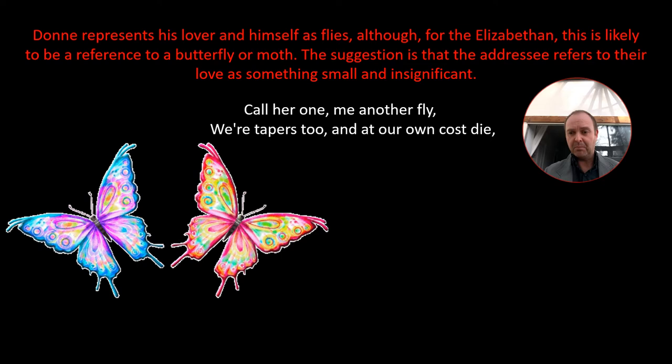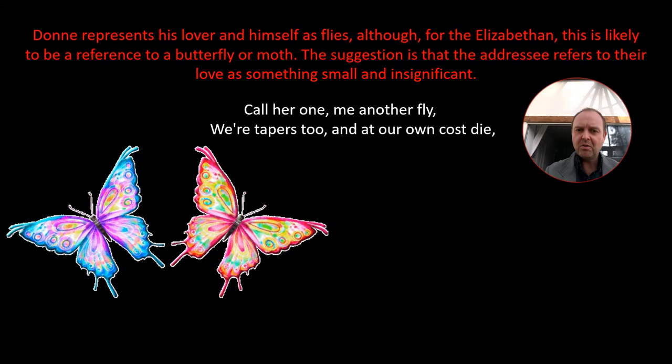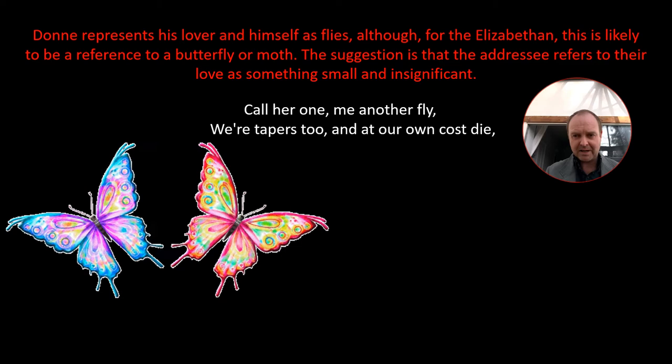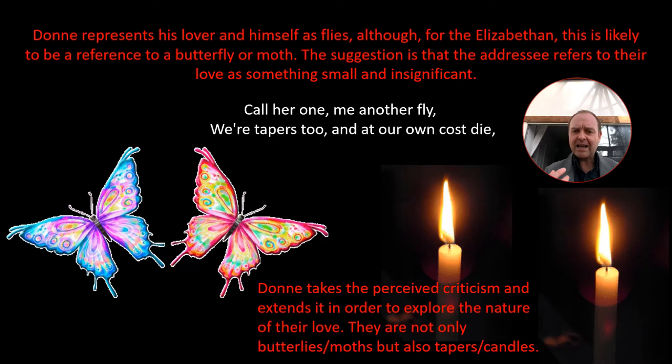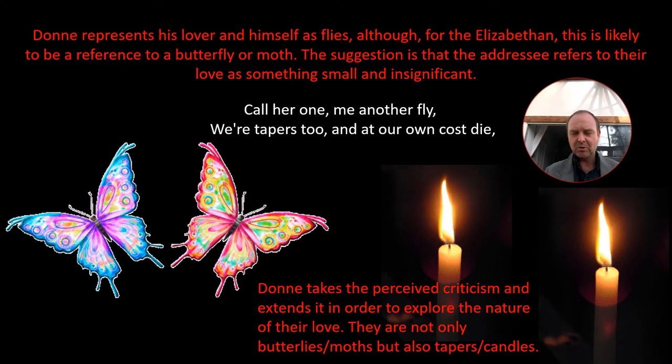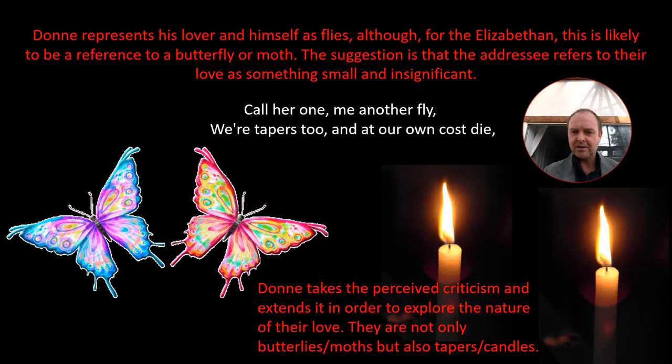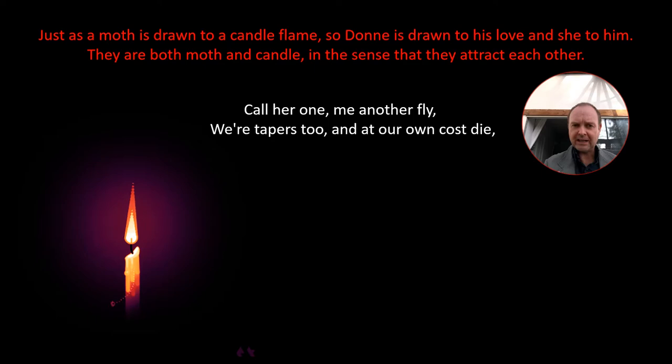The suggestion is that the addressee refers to their love as something small and insignificant — that's just the addressee making that claim, when for Donne, obviously, it's quite the opposite. So Donne takes this perceived criticism and extends the concept in order to explore the nature of their love. They're not only butterflies or moths, but also tapers or candles.